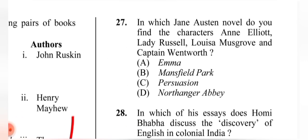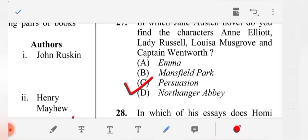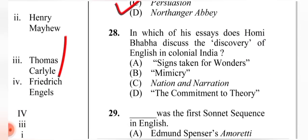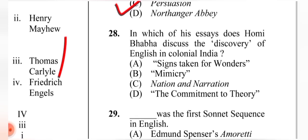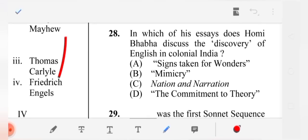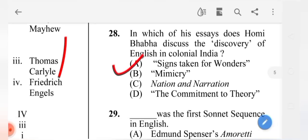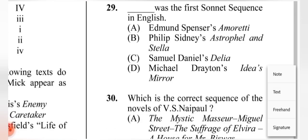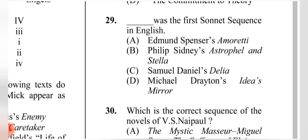Question 27: In which Jane Austen novel do you find the characters Anne Elliot, Lady Russell, Louisa Musgrove, and Captain Wentworth? The correct answer is (C) 'Persuasion.' Question 28: In which of his essays does Homi Bhabha discuss the discovery of English in colonial India? The correct answer is 'Signs Taken for Wonders.'